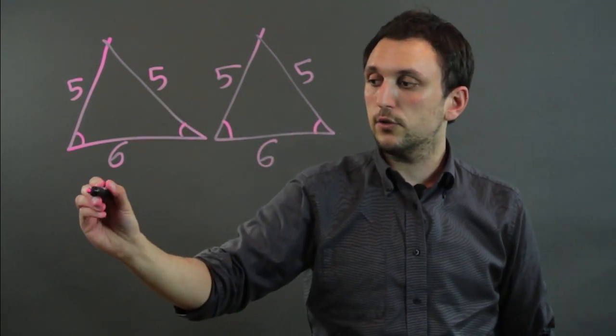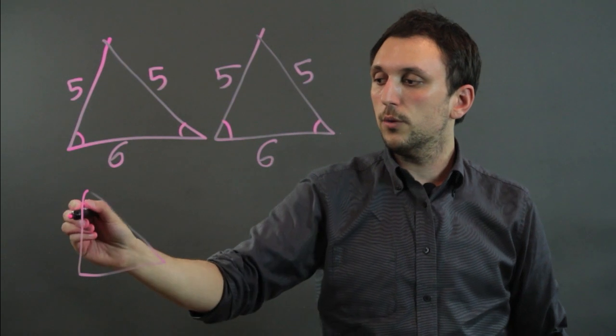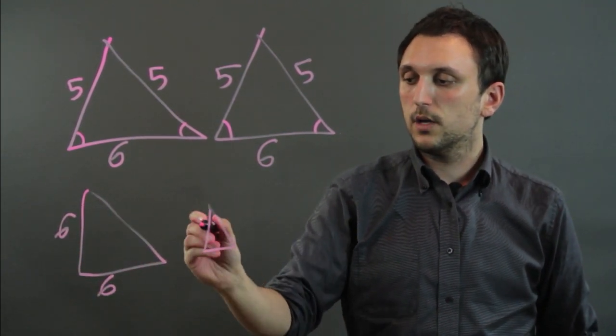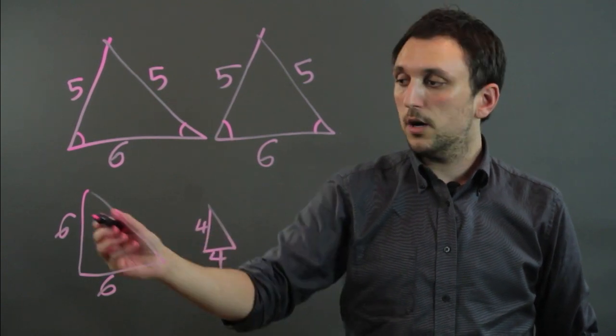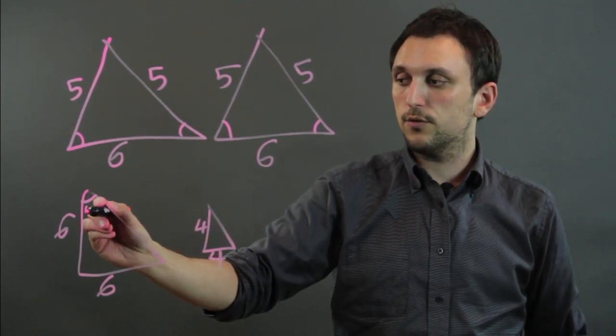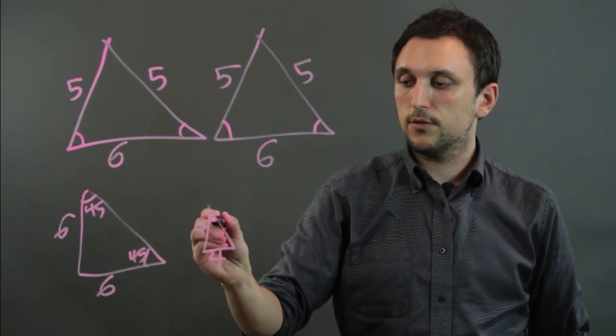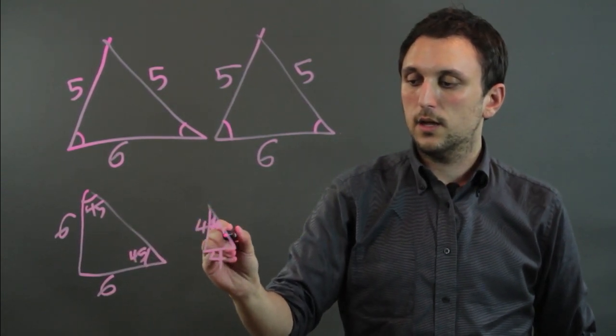Now, if we had an isosceles triangle like this, where it was six and six, but then here it's four and four, but all the angles were the same, like this was 45 and 45, 45, and this was 45 and 45.